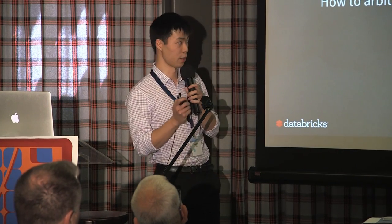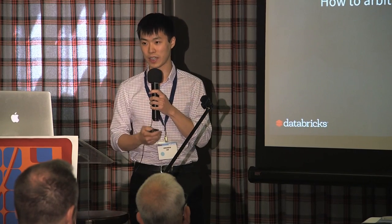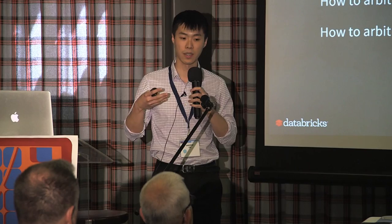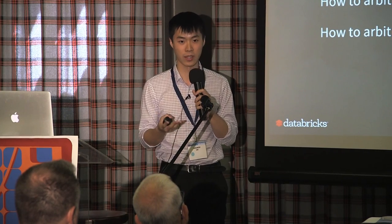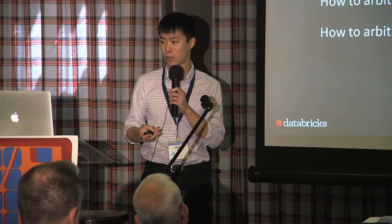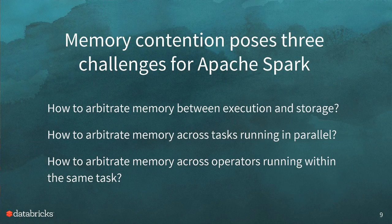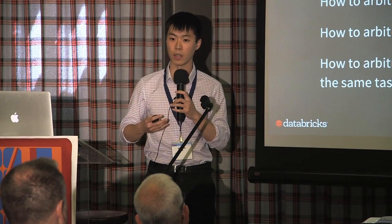There's memory contention between the two main use cases of memory in Spark: execution and storage. There's also memory contention across tasks running in parallel. In Spark, a task is a small unit of execution representing a partition in your data. If your dataset has 200 partitions, your Spark application will launch 200 tasks, and each worker will try to run as many of those tasks in parallel as possible. Further, even within a task, there is memory contention across operators — you can think of operators as something you do to your data, such as sort or group by.